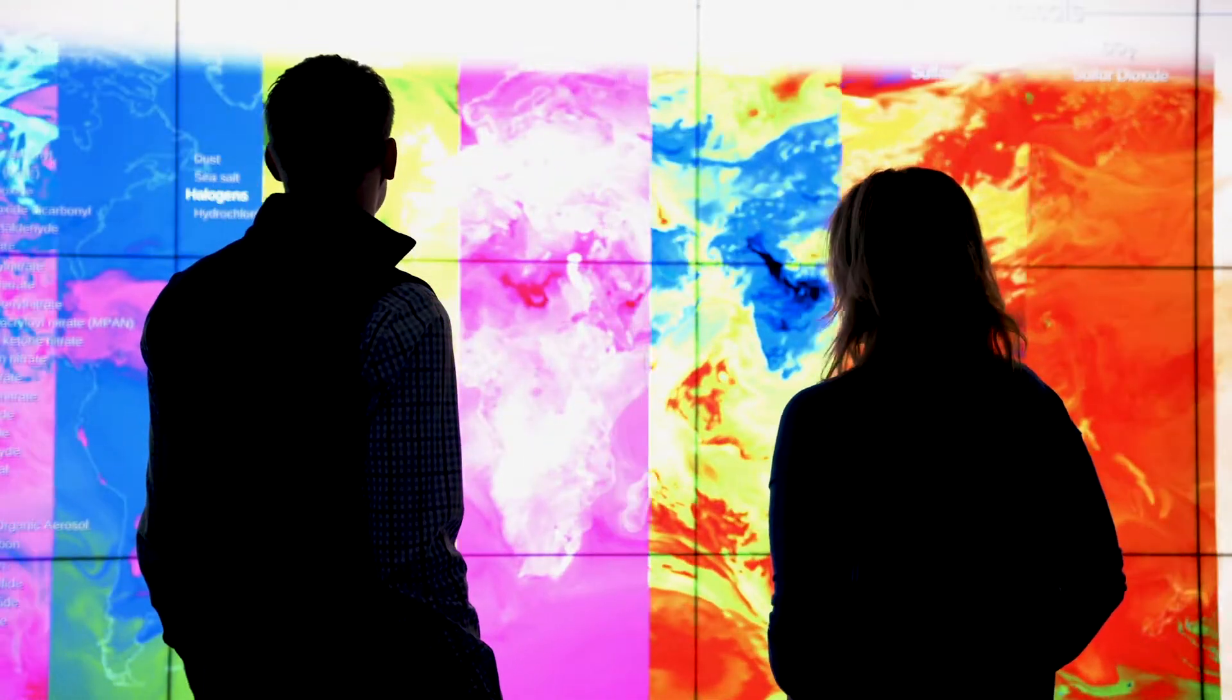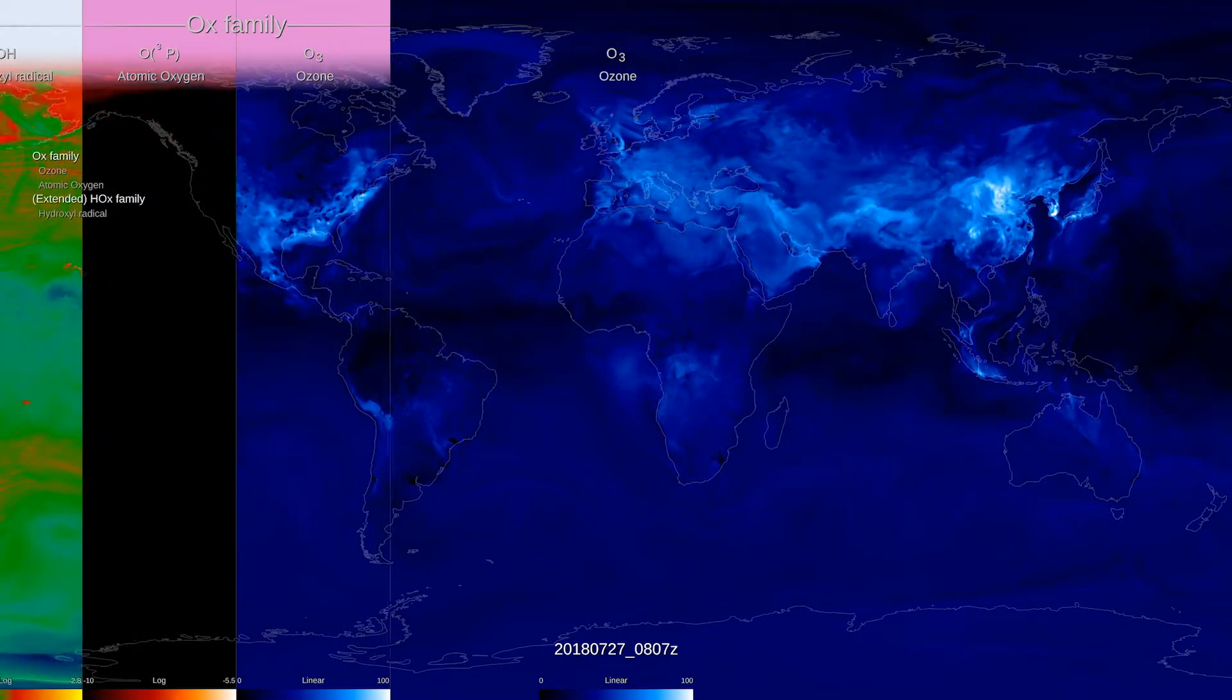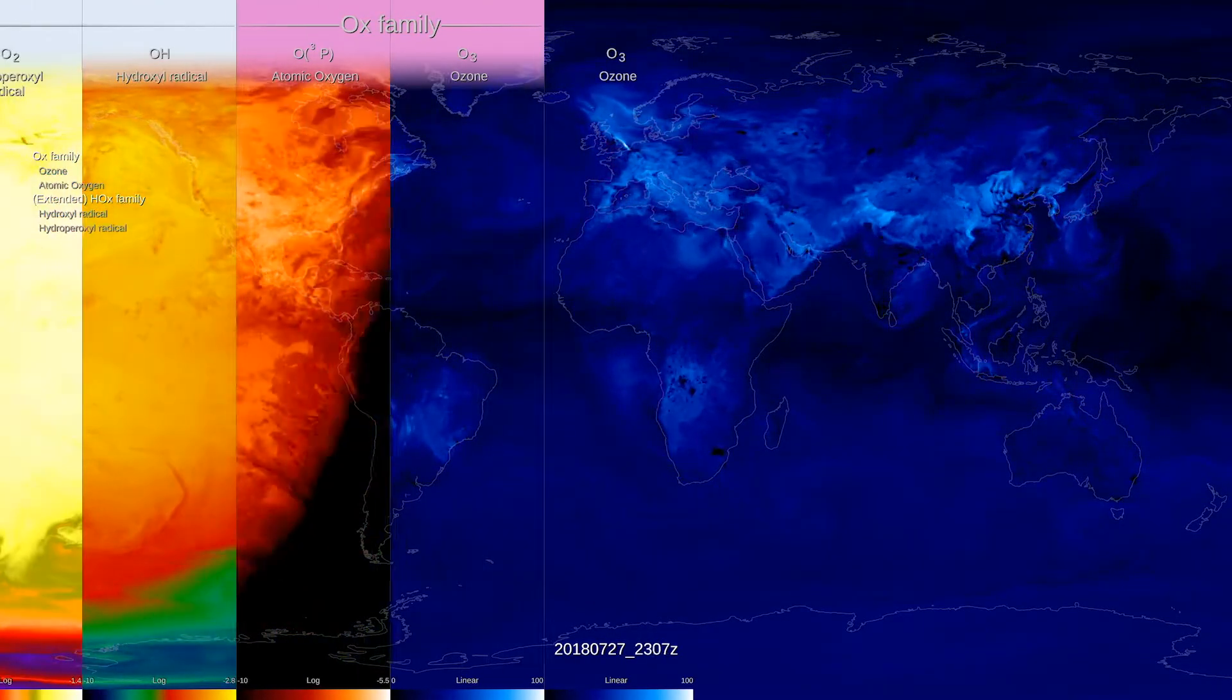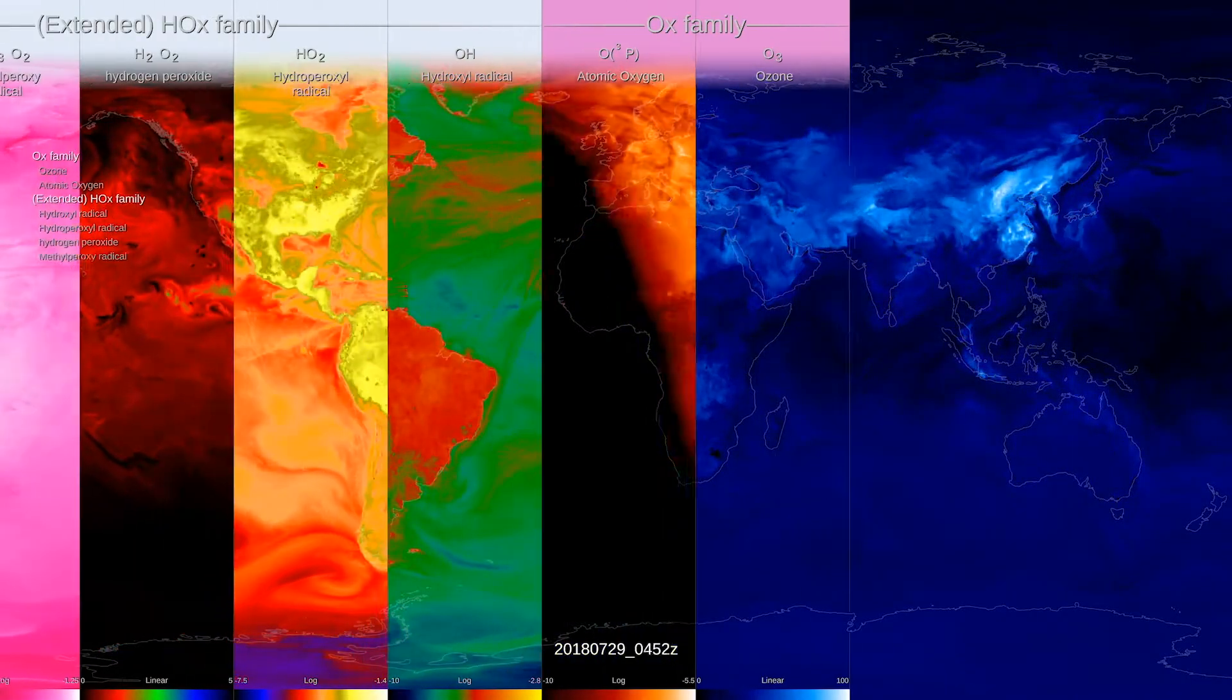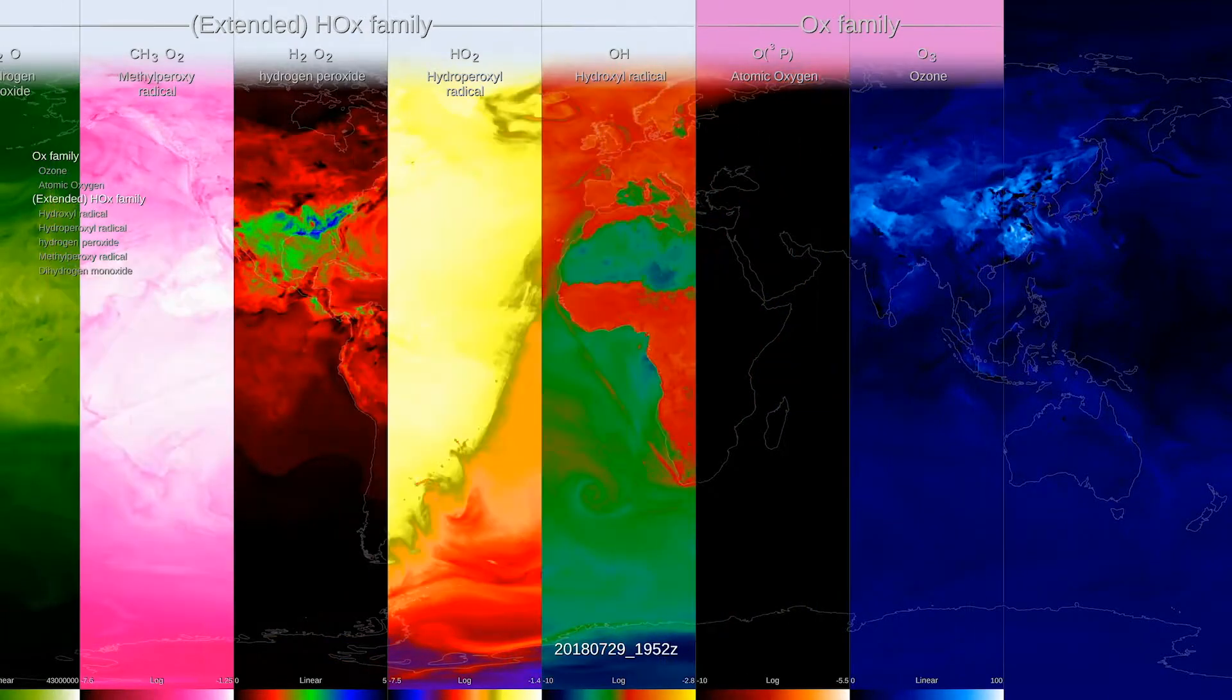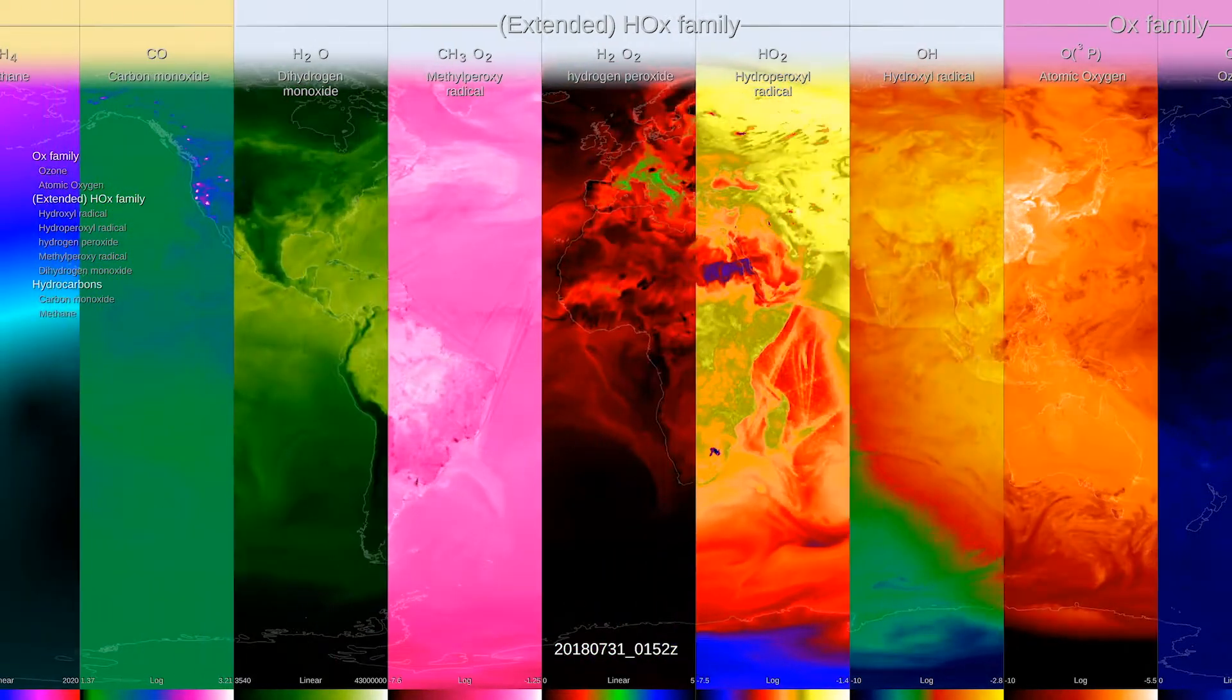By merging models and satellite data, we get a much fuller picture of what's going on throughout the atmosphere. We can see gases that we couldn't see with satellites alone. We can see the parts of the atmospheric column that we really need to know, like the ground level contributions of pollutants that we need to communicate to policymakers to protect people's health.